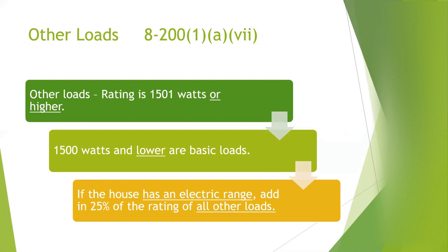If the house has an electric range, then you add in 25% of all other loads — that's item A. If it doesn't have a range, you go to item B: 100% of the combined load up to 6,000 watts, plus 25% of the combined load that exceeds 6,000 watts. So if an electric range has been provided for in your service calculations, use item A; if not, use item B.